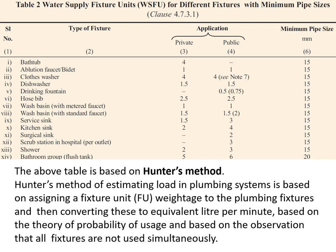National Building Code of India, Part 9, recommends water supply fixture units for different fixtures with minimum pipe sizes through a table. For a bathtub spout, the water supply fixture units are considered 4, and the requirement can be fulfilled by a 15 mm diameter pipe. For an ablution tap, the water supply fixture unit is considered 1. For a clothes washer or washing machine, it is 4. For a dishwasher, it is 1.5. For a kitchen sink, it is 2. For a shower, it is 2, and the minimum pipe size required is 15 mm.